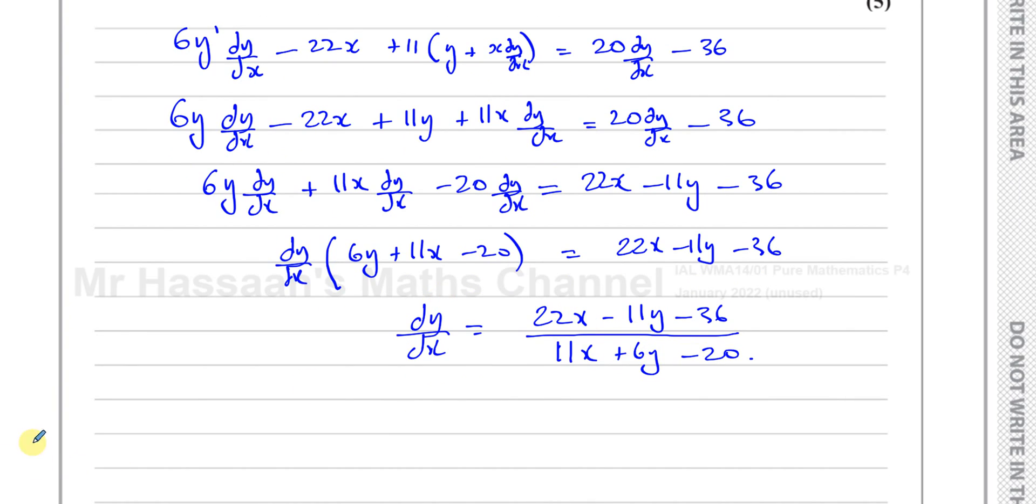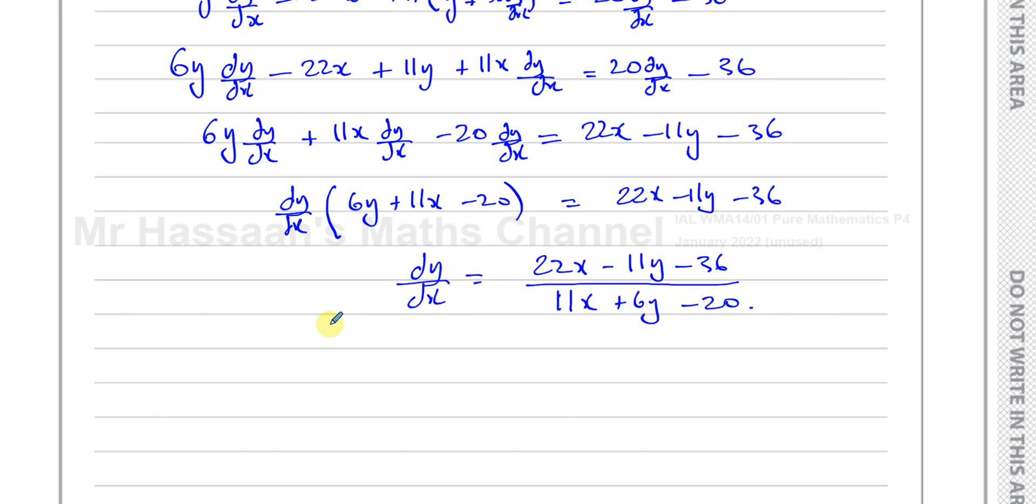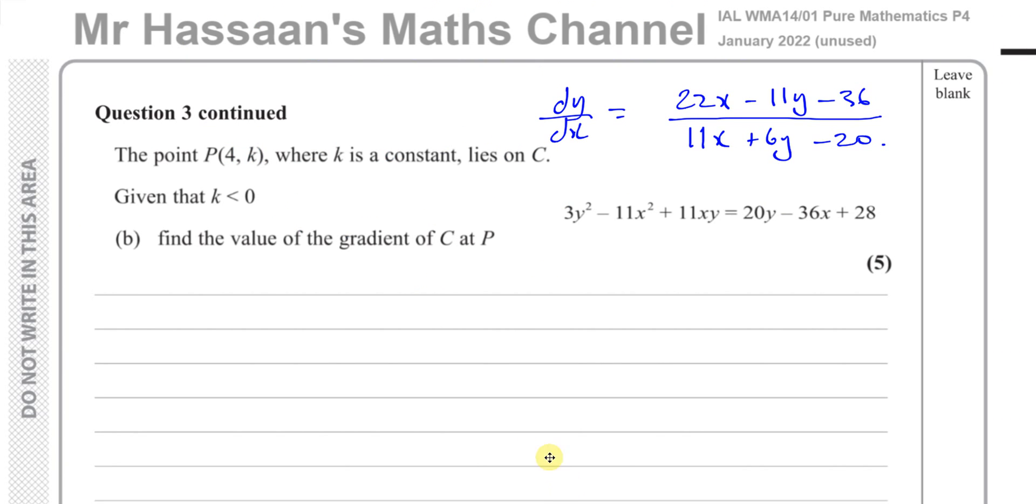So that's the answer to part A. Now for part B. We're told that the point P, which is given the coordinates (4, k), where k is a constant, lies on C, lies on this curve. Given that k is less than 0, find the value of the gradient of C at P.